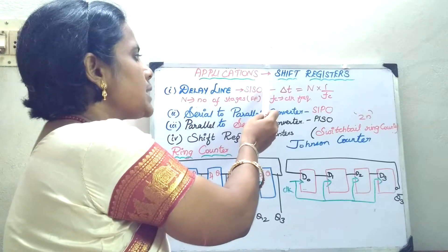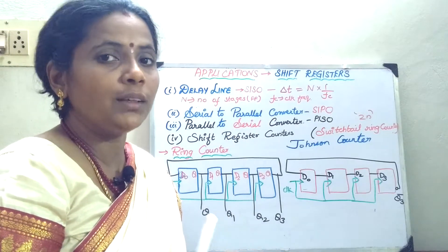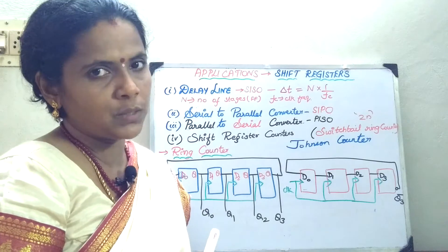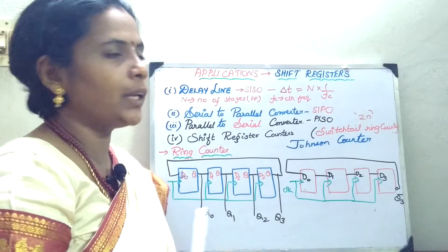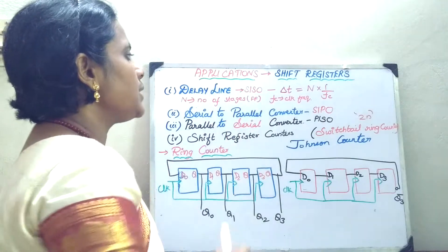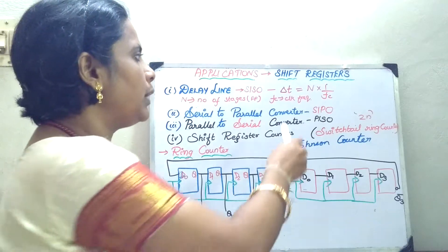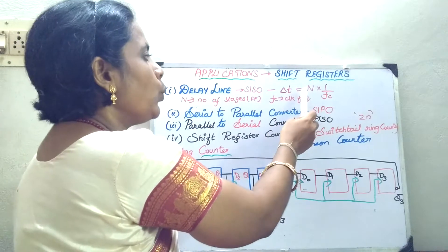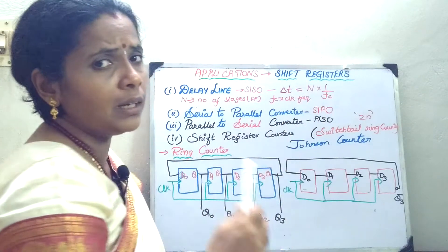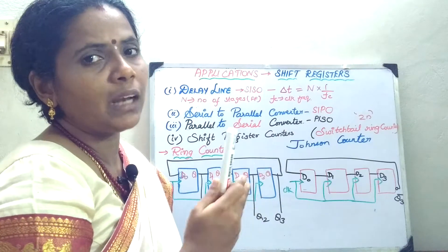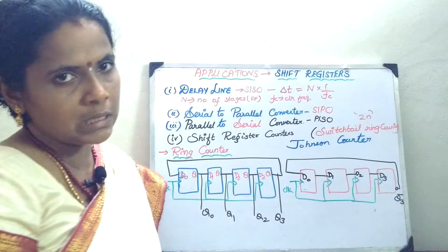Whenever I am going to consider the serial-in serial-out register, mainly it will be used for the delay purpose. Whenever I want to introduce a delay in the digital circuit, I can use the serial-in serial-out shift register where it is going to introduce a time delay of del_t, which is nothing but n multiplied by 1/fc. Here n represents the number of flip-flops or the number of stages, and fc represents the clock frequency.